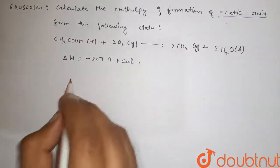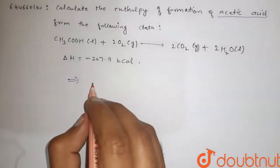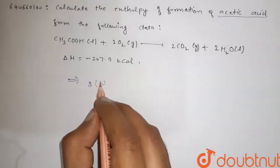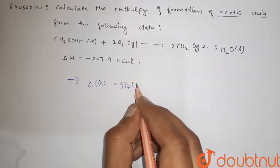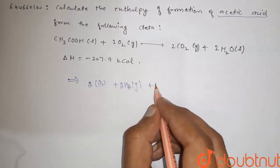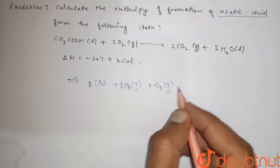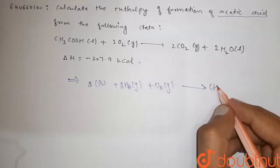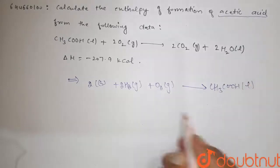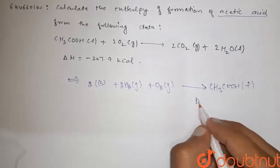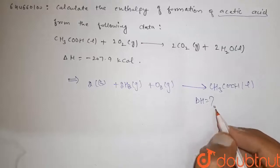So guys, the required equation is 2 carbon solid plus 2H2 gas plus O2 gas that would be CH3COOH liquid. We have to find Delta H.